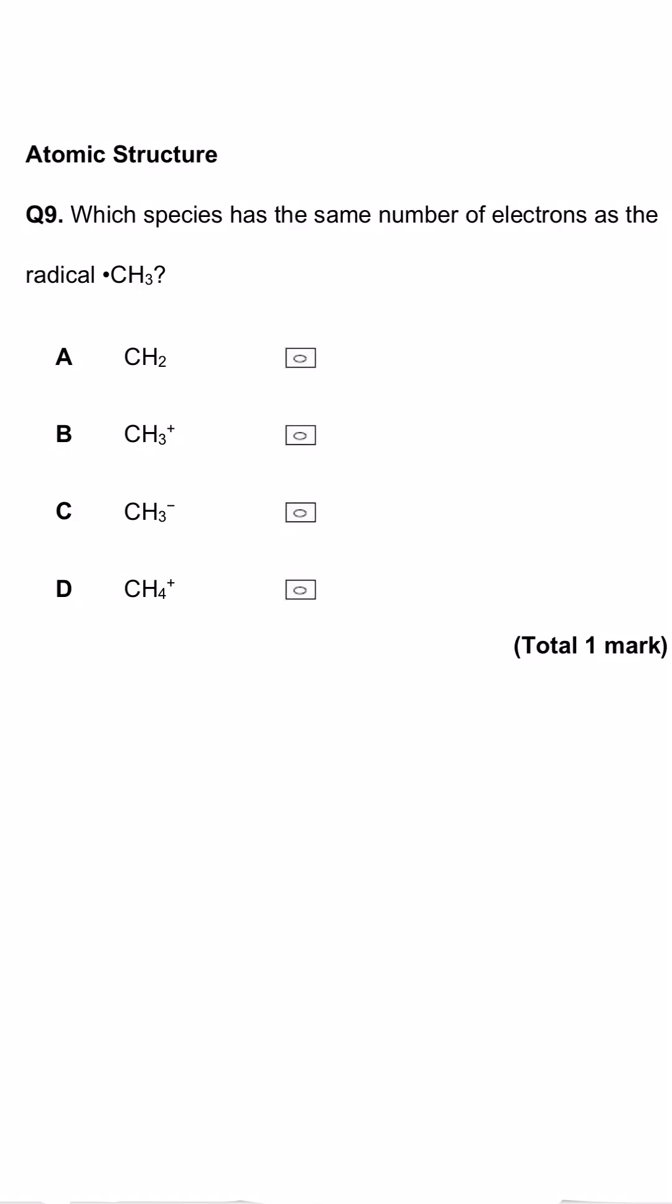This question is about the number of electrons in particular species. We're asked which of our four options has the same number of electrons as this radical shown here.